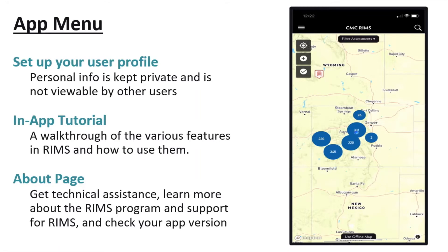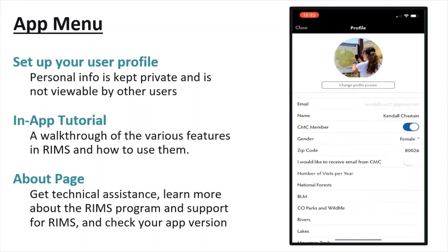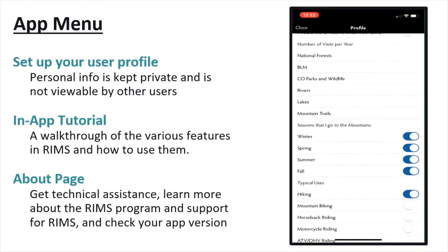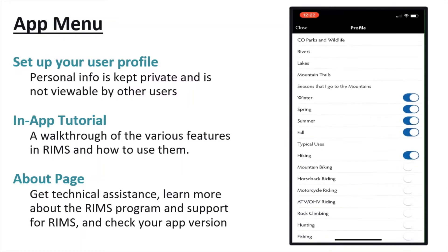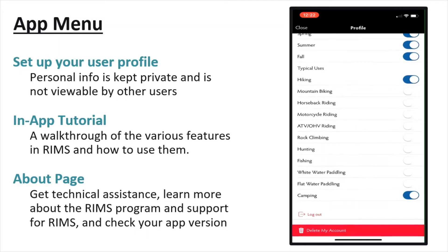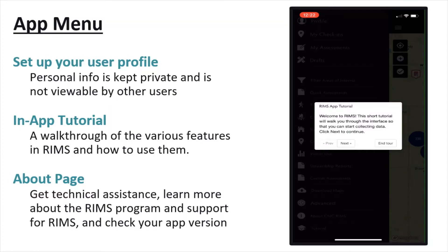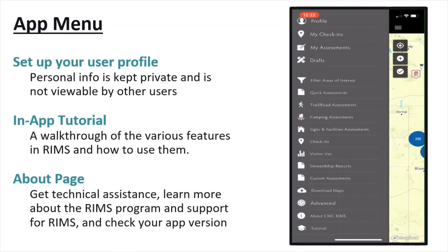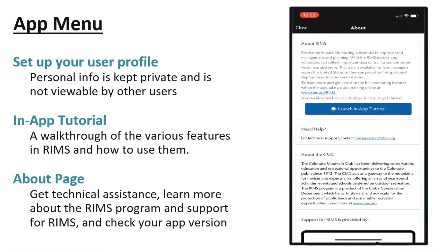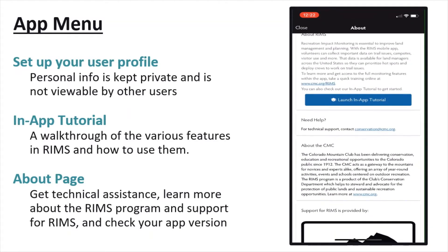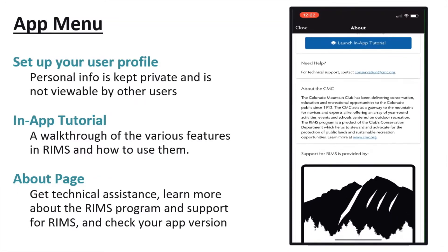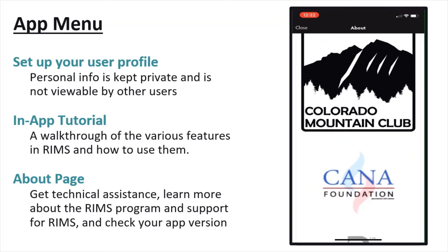We'll begin with the app menu, represented by the three lines in the top left-hand corner. Once you've downloaded the app, the first thing you will need to do is fill out your user profile. This helps us to understand our user base and to contact you with app updates. Your personal information is kept private and not viewable by other users. An in-app tutorial is available in the menu which will walk you through the various features of RIMS and how to use them. You can also access the tutorial through the About page, where you can get technical support, learn more about the CMC and the RIMS program, support for RIMS, and check your app version to be sure it is up to date.